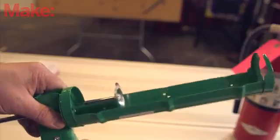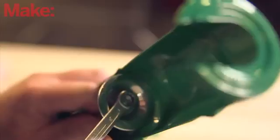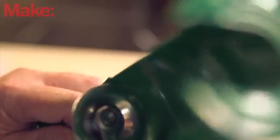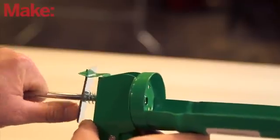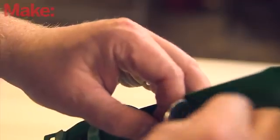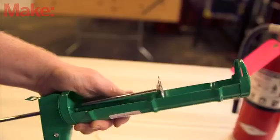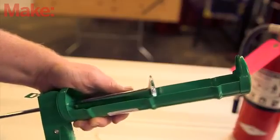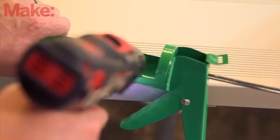The first step is modifying the caulking gun so it no longer ratchets. Remove the small nut from the center of the plunger and then pull the rod free from the gun. Remove the locking tab and then replace the plunger rod and reattach the plunger assembly. Pulling the trigger should push the plunger forward, but when you let go, it should return to its original position.